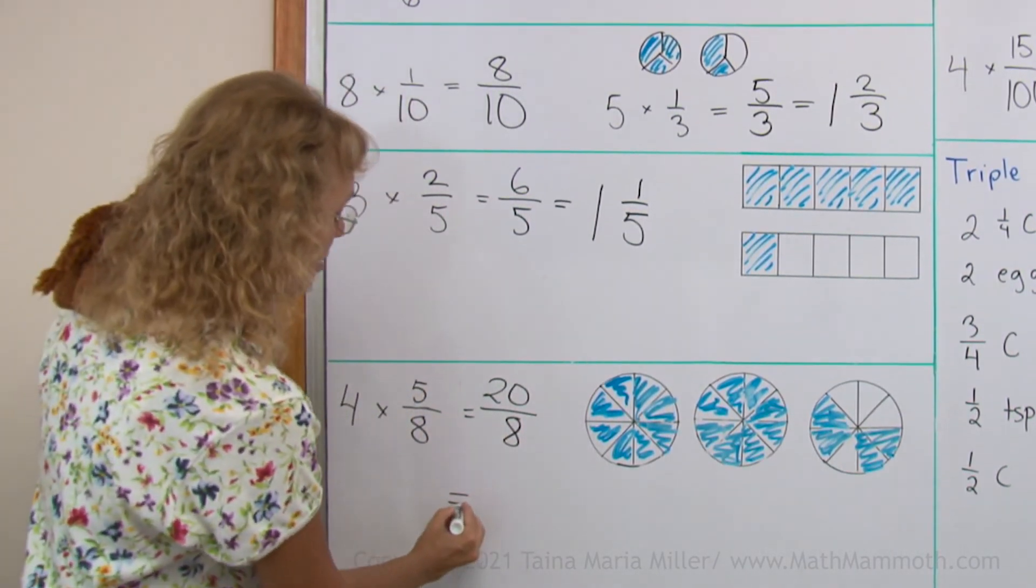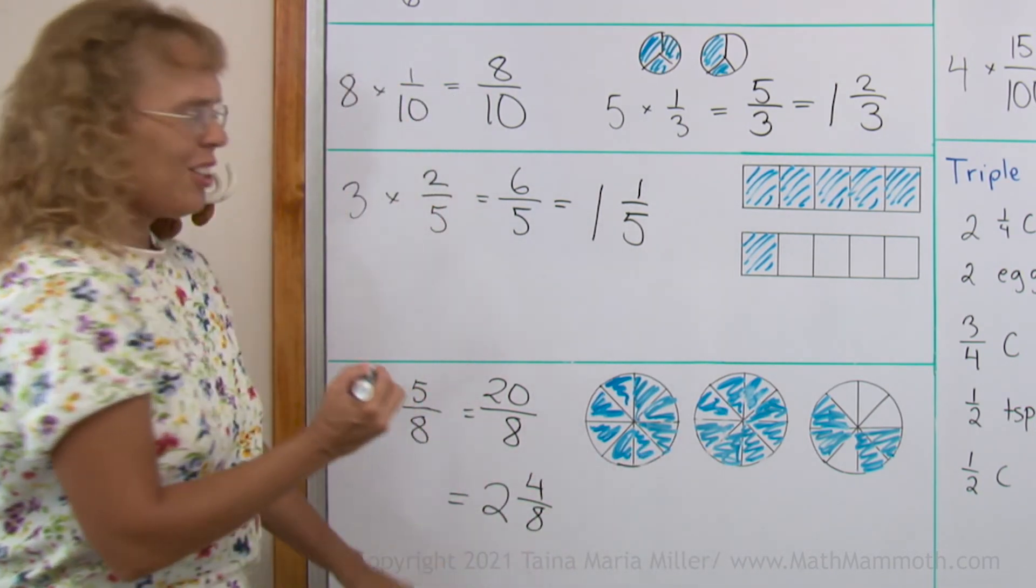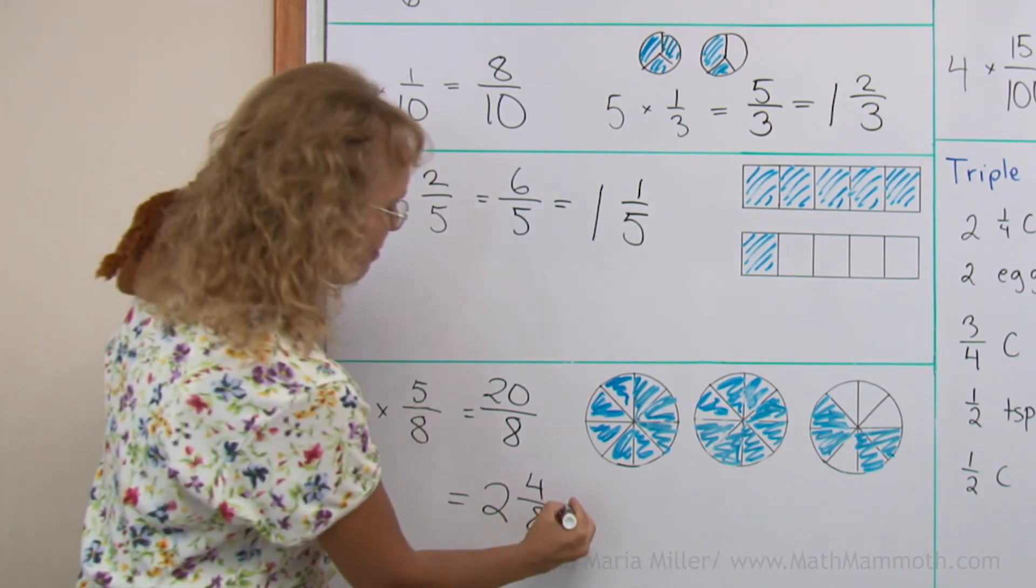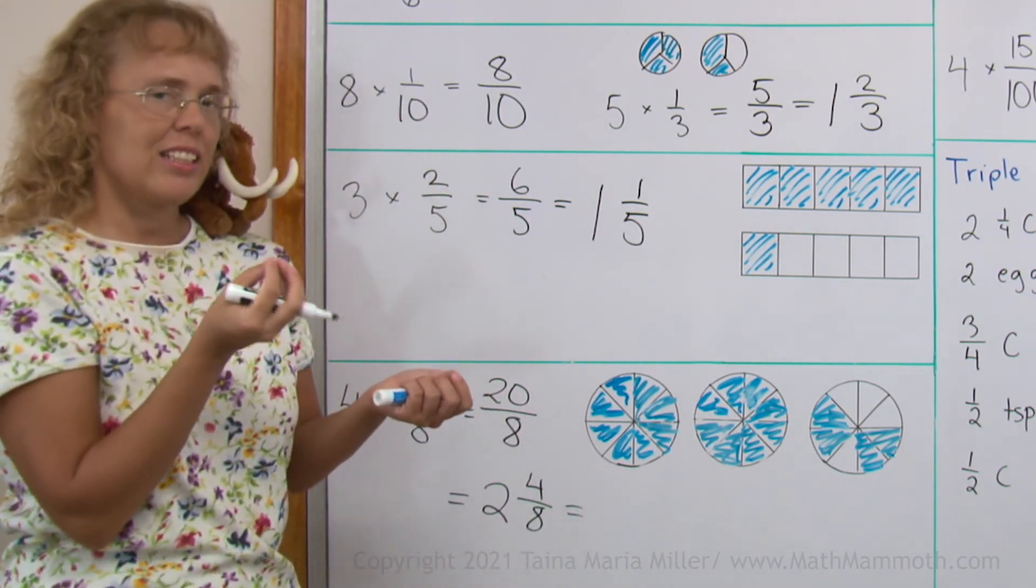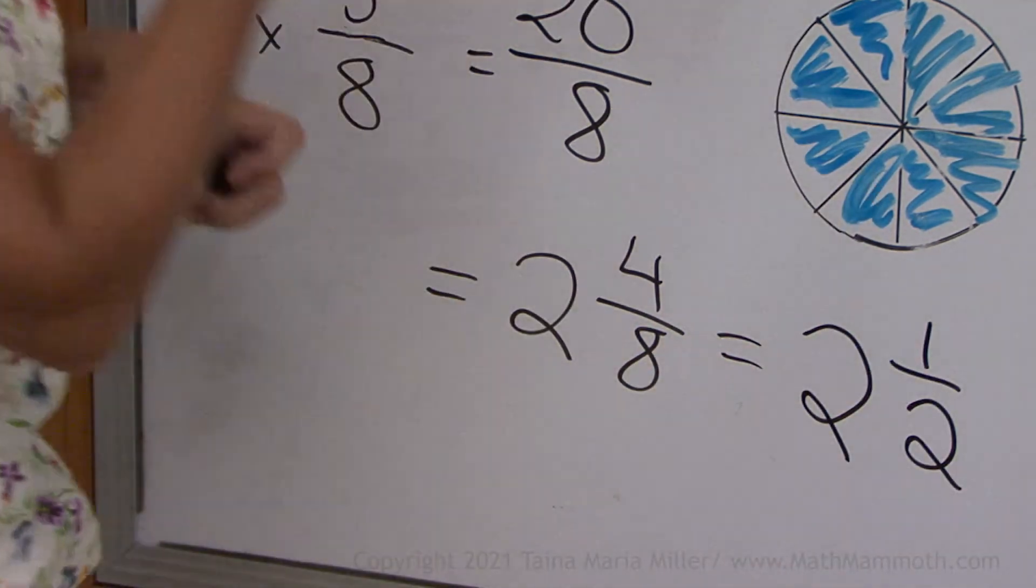And then that, as a mixed number, as we can see in the picture, it is 2 whole pies and 4 eighths. And you can do one more thing to it. 4 eighths, isn't that 1 half? So we can write it in a simpler form as 2 and a half pies.